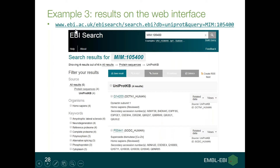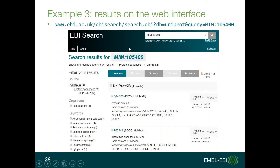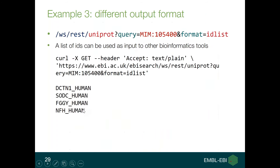Example three can also be visualized on the web interface, which is an easier way to get an at-a-glance summary of the data available, the numbers involved, and this can help guide use of the RESTful API. The facets on the web interface appear as filters available on the left side of the web page.